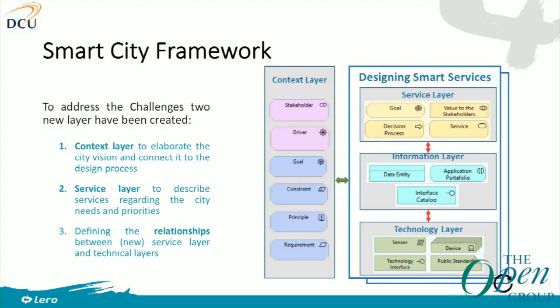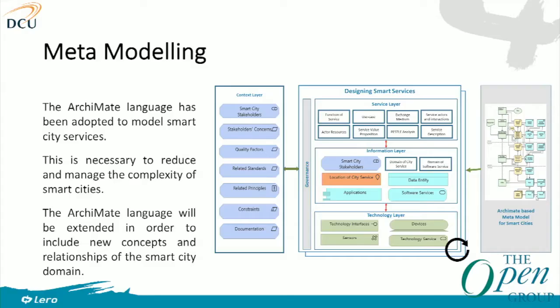We have three main focus areas: the context layer, the service layer, and the relationship between them. This relationship and alignment is new because we have created a new service layer. In smart cities, we don't really have that business layer — we have services, and we have different businesses coming together to create a new service, for example in the mobility area. We have done metamodeling for the created architecture. The footfall counter is one of the use cases we have had for Limerick City Council, and we are trying to do simulation to show them the results and how effective this architecture can be.